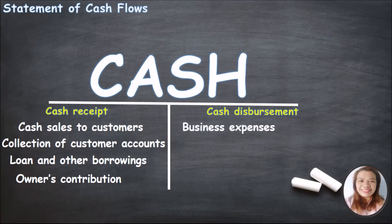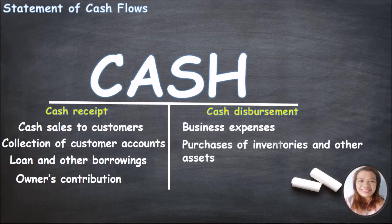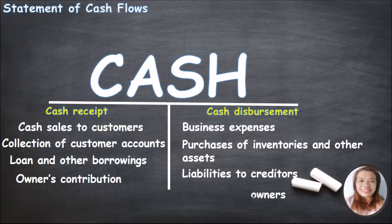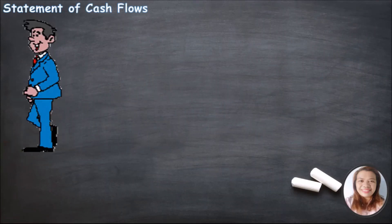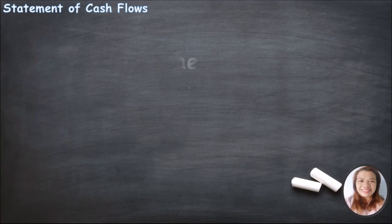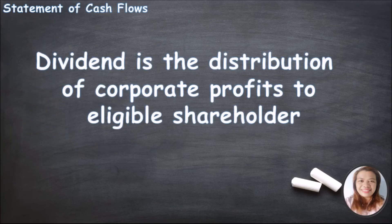Cash disbursements are payments for business expenses, purchases of inventories and other assets, liabilities to creditors, and dividends to owners. Dividends is the distribution of corporate profits to eligible shareholders.